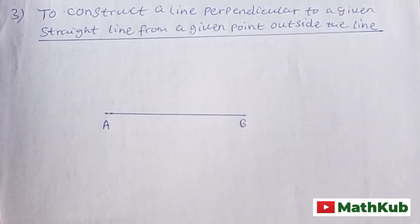In number three: to construct a line perpendicular to a given straight line from a given point outside the line. So we have a straight line AB, then we need to find a point or you pick a point outside this line.